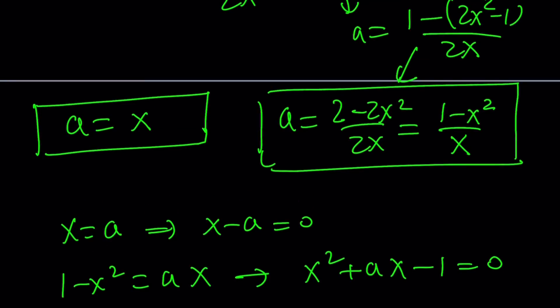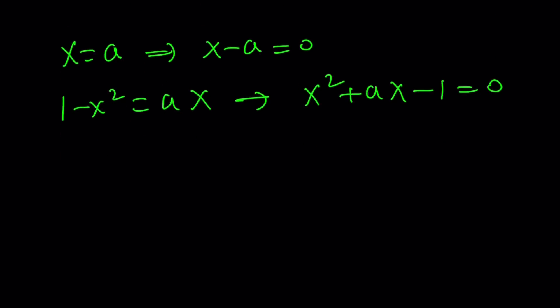So let's go ahead and do that right now. So the first factor is going to be x minus a. The second factor is going to be x squared plus ax minus 1 equals 0. Now what is that supposed to mean?